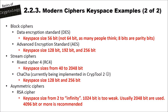Looking at modern cipher examples: DES has a keyspace size of 2 to the power of 56 — not 64 bits, because eight bits in the DES key are parity bits and not part of the cryptographic key. DES can today be searched through with specialized hardware or cloud computing in about a day. AES has keyspace sizes of 128, 192, or 256 bits; for security purposes, the 256-bit version of AES is recommended.